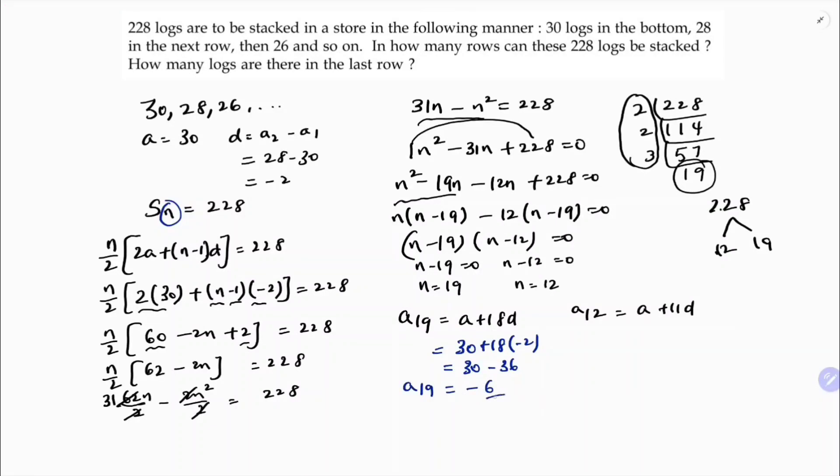So in the 19th row there are minus 6 logs which is not possible, so number of logs cannot be negative. So simplify this: a is 30, 11 into minus 2, 30 minus 22, which is 8. So in the 12th row there are 8 logs.